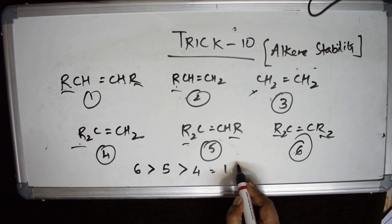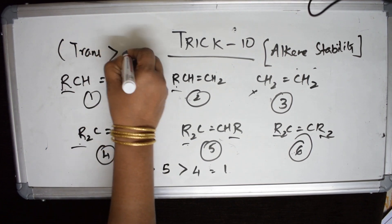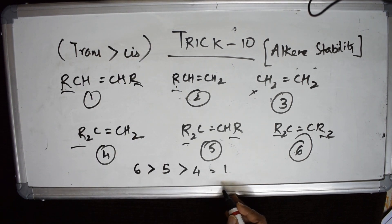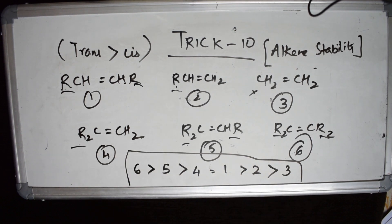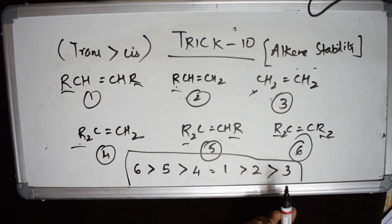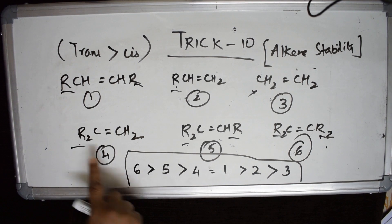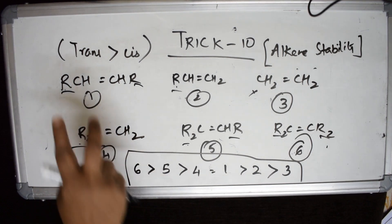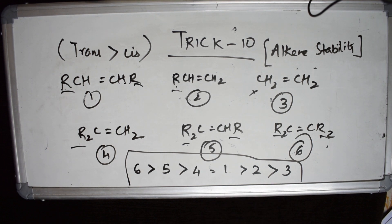For cases with equal alkyl groups, remember: trans is greater in stability than cis. So the order is: 6 > 5 > 4 = 1(trans) > 2 > 3. Example 6 has four alkyl groups, example 5 has three, example 4 and 1 both have two but trans-1 is more stable than cis, then example 2 with one alkyl group, and example 3 (ethylene) is least stable. This is Trick 10.